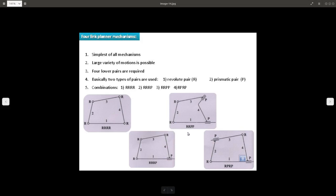This is called RRPP. That is because if you see in this mechanism two revolute pairs are adjacent to each other, where in this case two revolute pairs are not adjacent to each other.